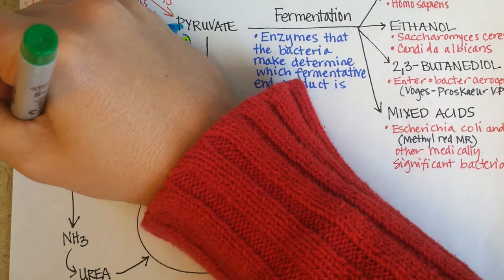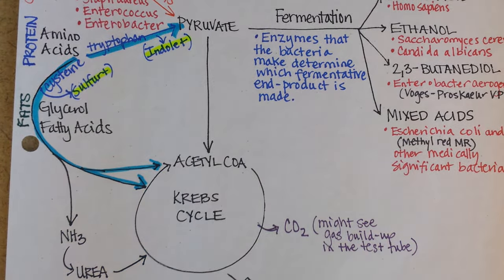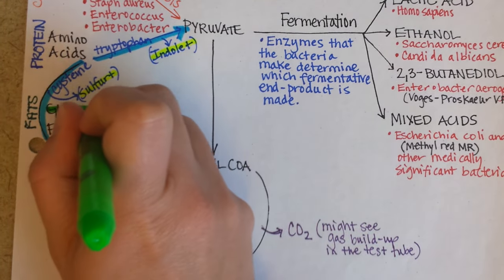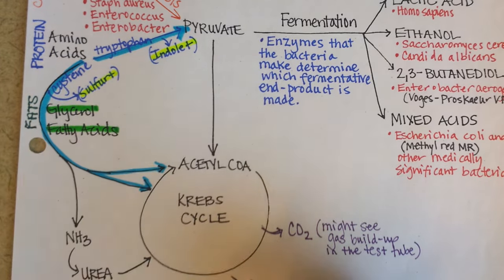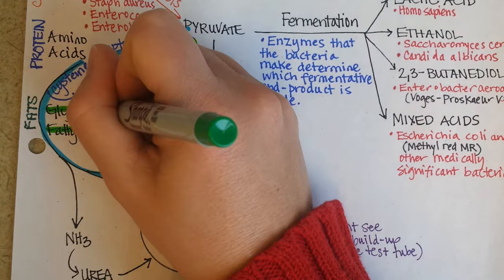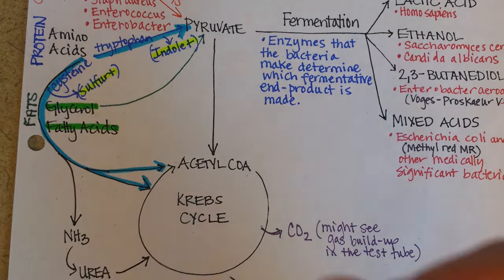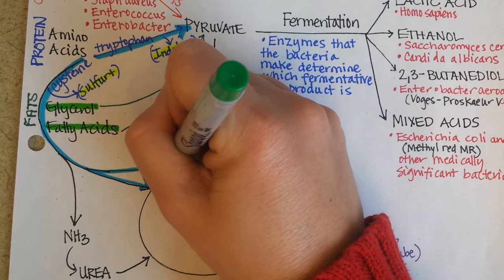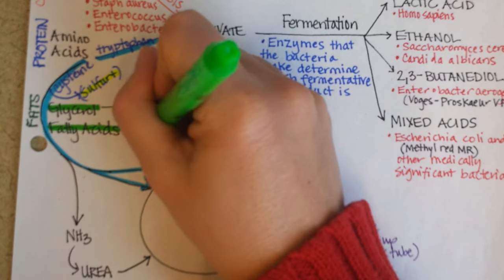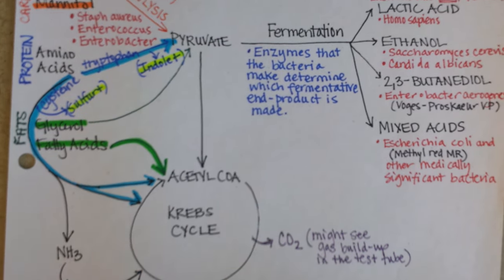Fats can also be used to make ATP. When a triglyceride is broken down, it's broken down into glycerol and fatty acid tails, which have different places to go. Glycerol is converted into pyruvate, and fatty acids head straight into the Krebs cycle. The point is that bacteria, just like humans, can use many different kinds of nutrients to make ATP.